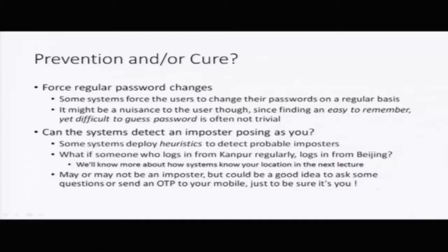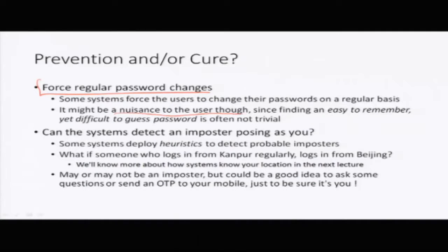Prevention or cure — can systems actually prevent themselves from any kind of attacks? Well, there are some heuristics that can be used. One is forcing regular password changes. Some systems, for example banking websites, force you to change your password fairly regularly, say every six months. This is one way of minimizing the effect of anybody trying to hack or guess your password. But surely it is going to be a nuisance for the user, because finding an easy-to-remember password which is difficult to guess is not an easy task.